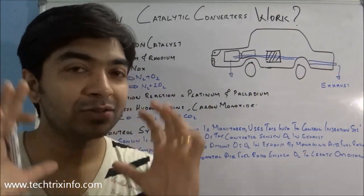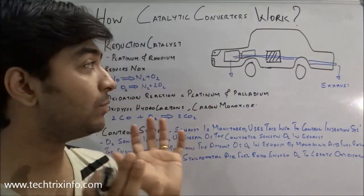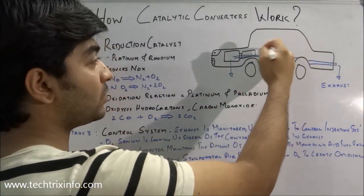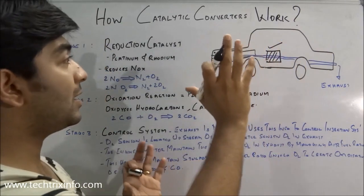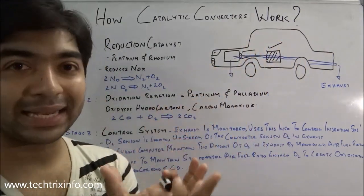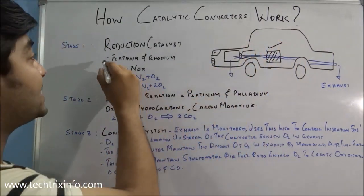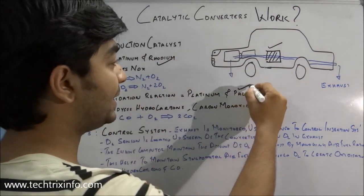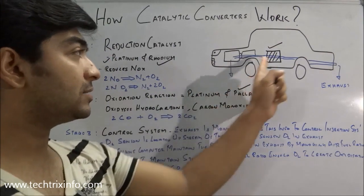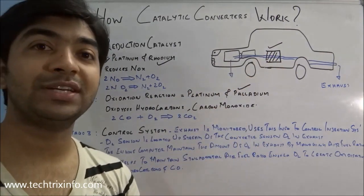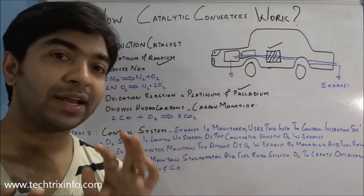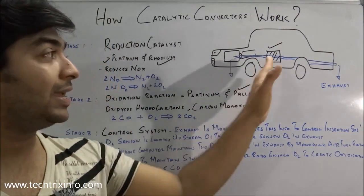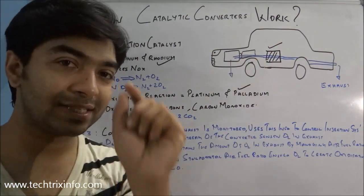This is the catalytic converter, and it is composed of metals like platinum, rhodium, and palladium. These are the three metals commonly used in catalytic reactions. There are three stages of chemical reaction happening inside a catalytic converter.